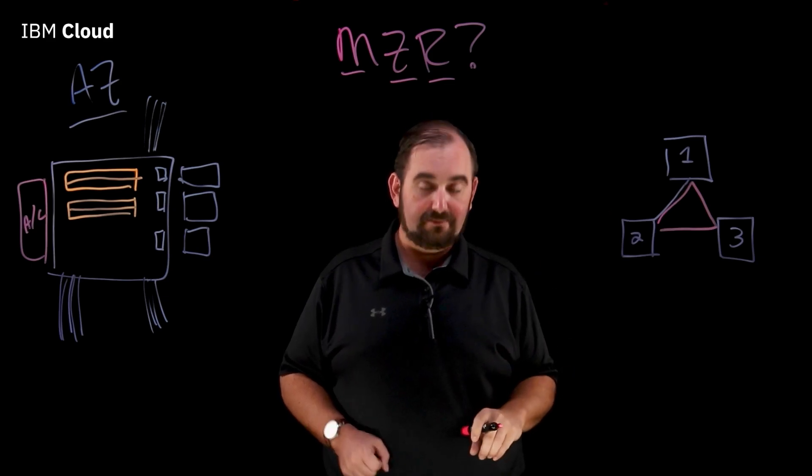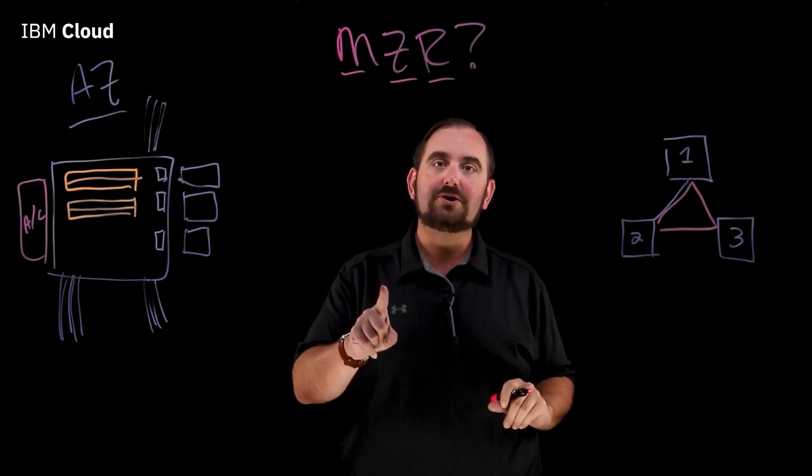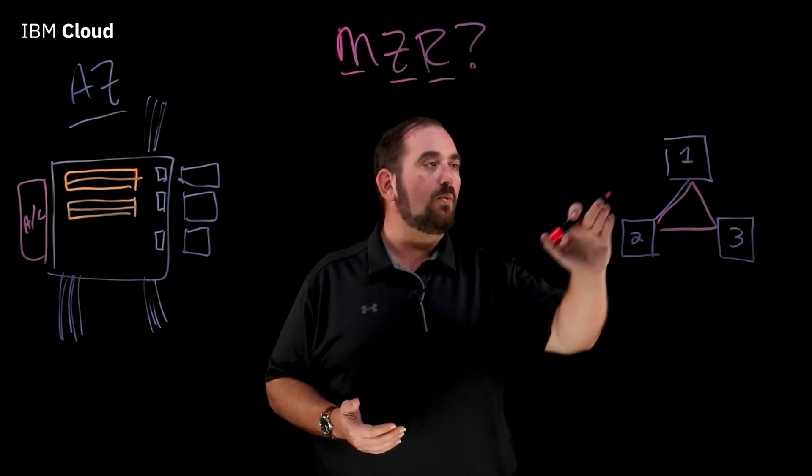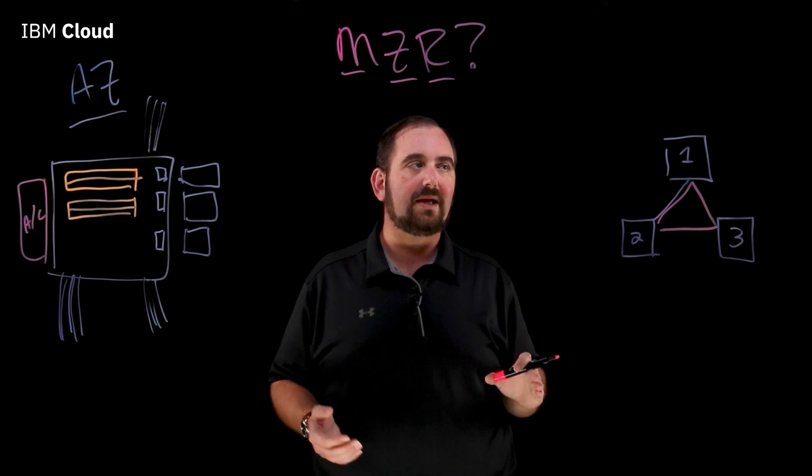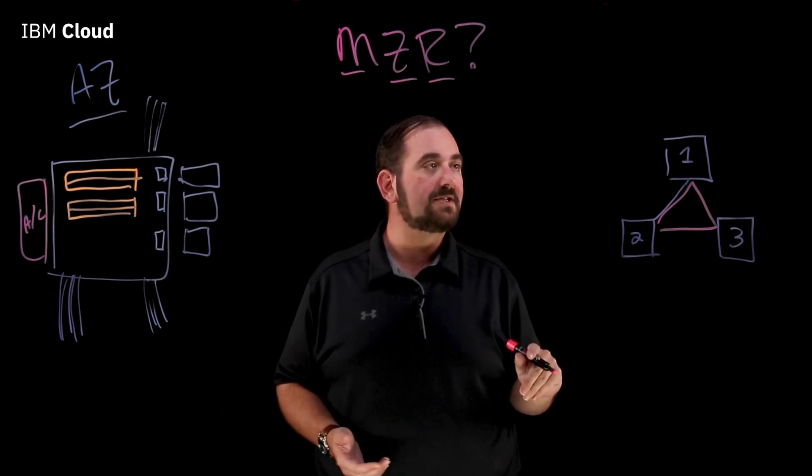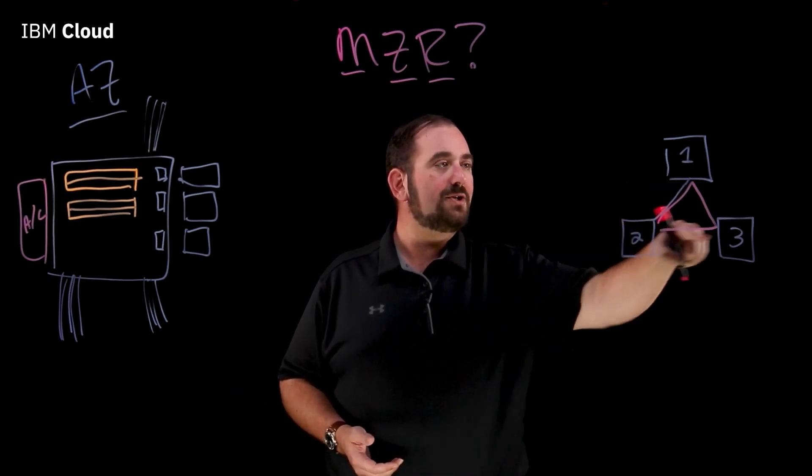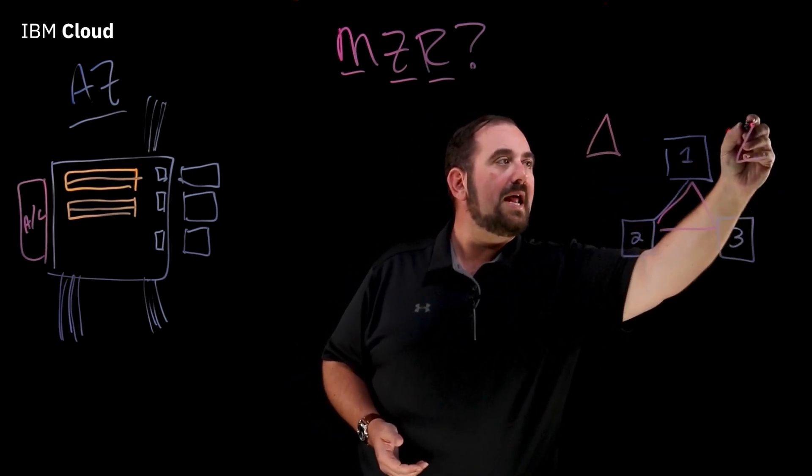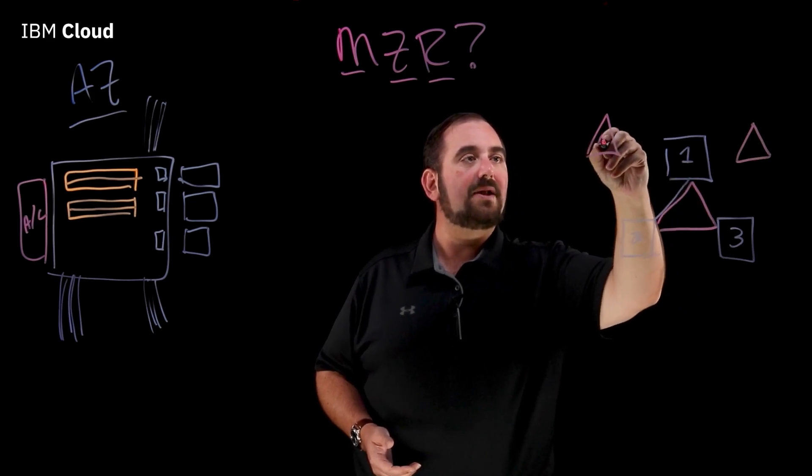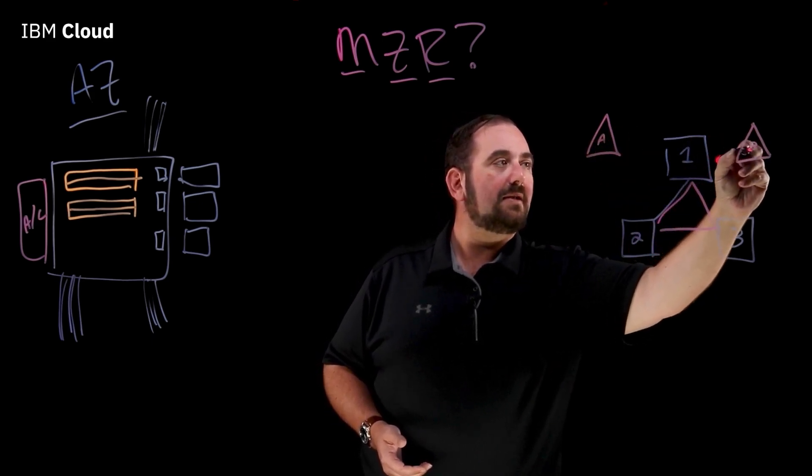But we're not done. I talked earlier about customers that want to come in and they want to bring their fiber to us. They don't just want to come in over a VPN. They want a dedicated MPLS circuit or something like that. So, in addition to our three zones, we are also going to have two network points of presence. And I'm going to call these A and B.